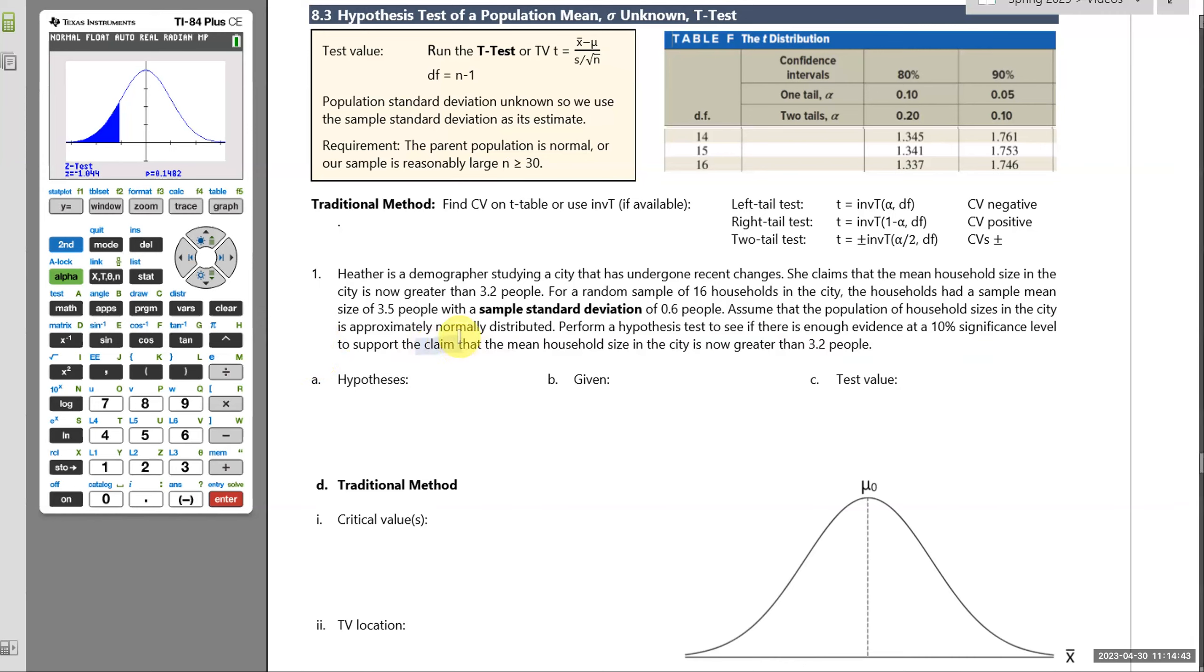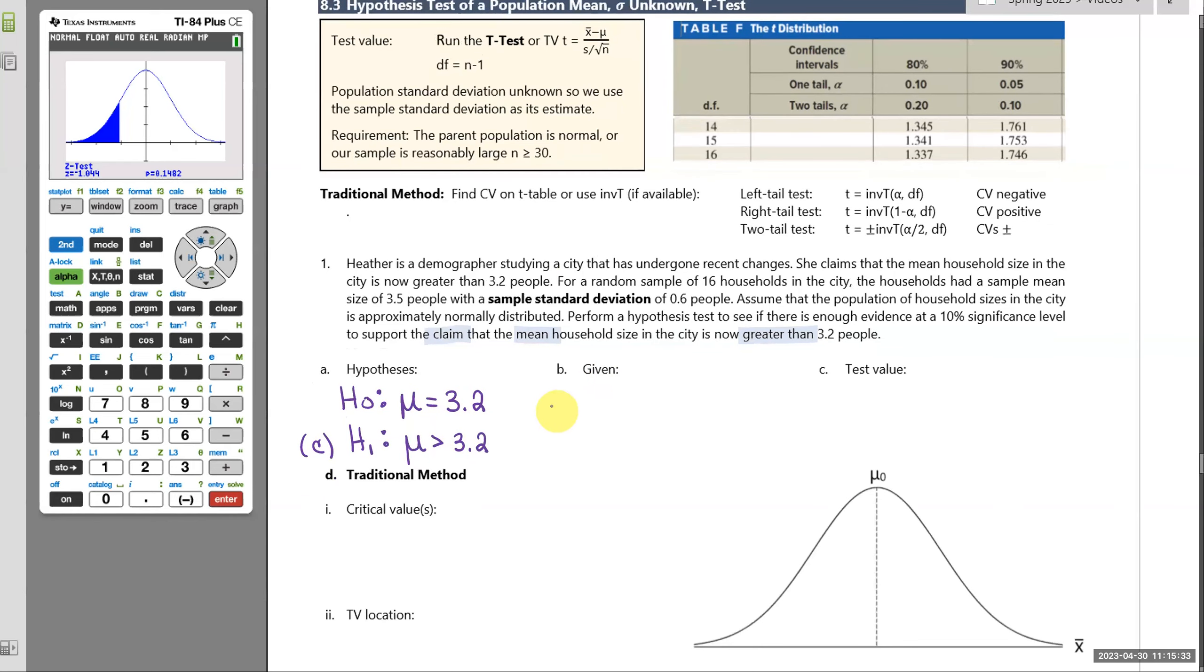So as always, we focus on writing our claim first. It's about a mean. And they're interested in whether the evidence will suggest that the mean is greater than 3.2. So let's take care of this first. So H naught, H1, and then we'll write our claim that the population mean for all households in the city is now greater than 3.2. So that's our right tail test. Greater than is always right tail. And then our null hypothesis is our equal. So nothing's changing from before.